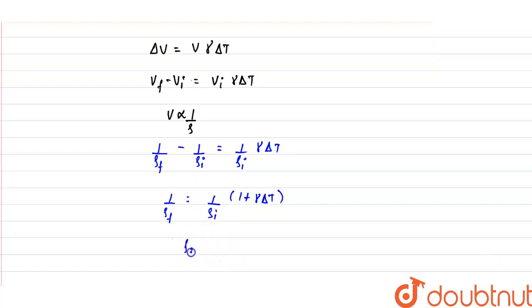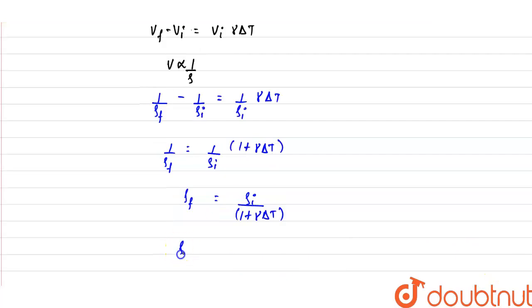Now from here final density comes out to be initial density divided by 1 plus γΔT. So we can write final density as initial density into (1 plus γΔT) raised to the power minus 1.